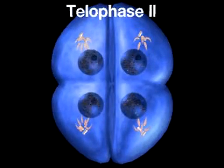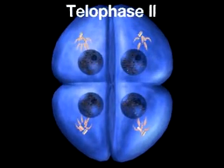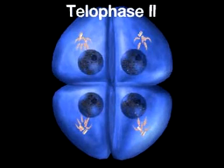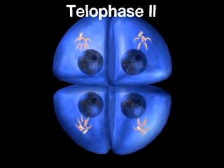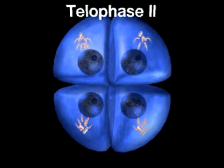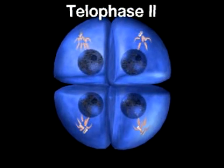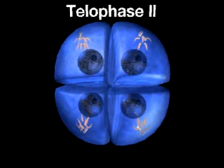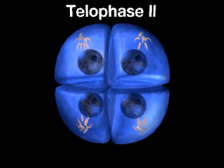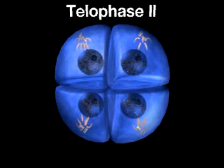During telophase II, nuclei reform, the spindle breaks down, and the cytoplasm divides. Four cells, each with half the number of chromosomes, are produced.